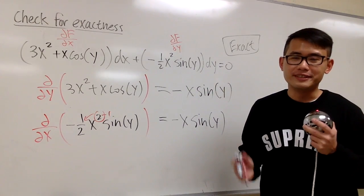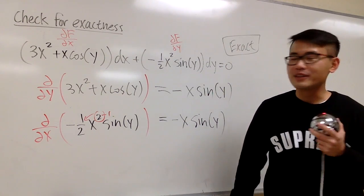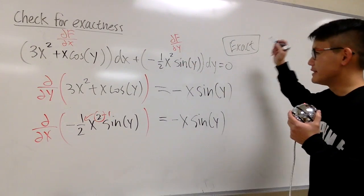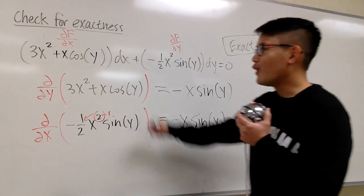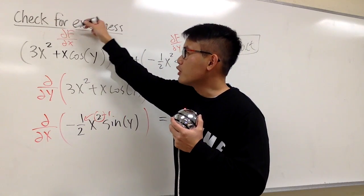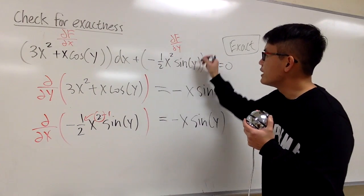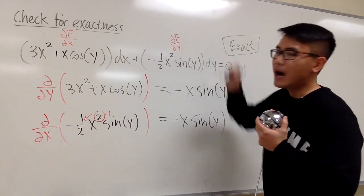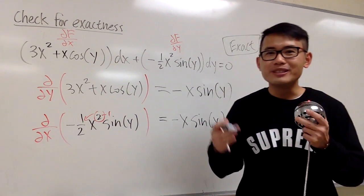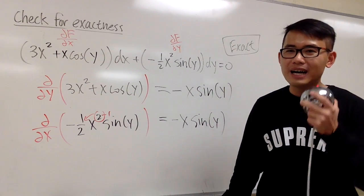Here's the summary: when we know a differential equation is exact, it just means that it came from the total differential of some function. Now we know this equation is exact, which means there is some function F such that M represents the partial of F with respect to x, and N represents the partial of F with respect to y. When we have this situation, we can use the method shown in the previous video to solve exact equations.